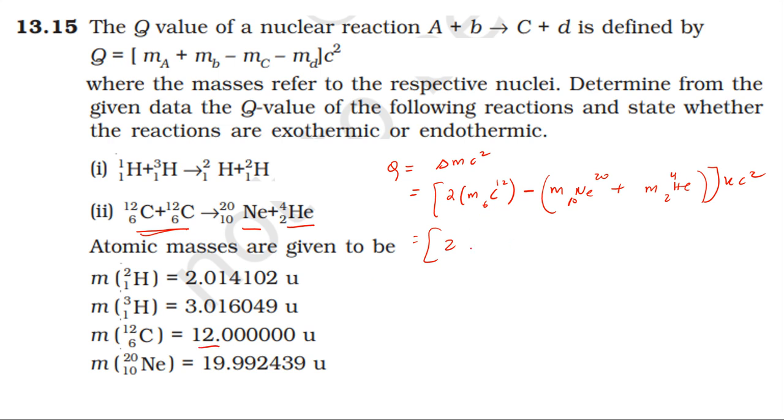Mass of carbon is 12.000000 u minus mass of neon 19.992439 u minus mass of helium 4.002603 u. The mass defect is 0.004958 u into C squared.